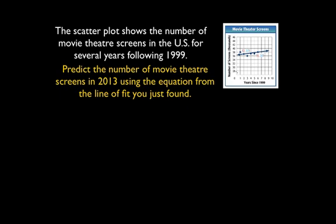Now it wants us to predict the number of movie theater screens in 2013 using the equation from the line of fit you just found. Now, so here's the equation. We've got y is equal to 0.25x plus 36.5. We're going to find out what the x will be. The x is the number of years since 1999 that is 2013. So 2013 minus 1999 is 14. So x is going to be equal to 14, which we'll plug in here.